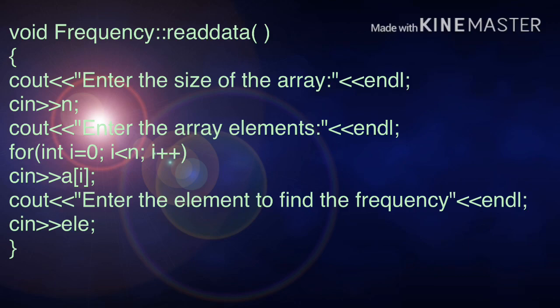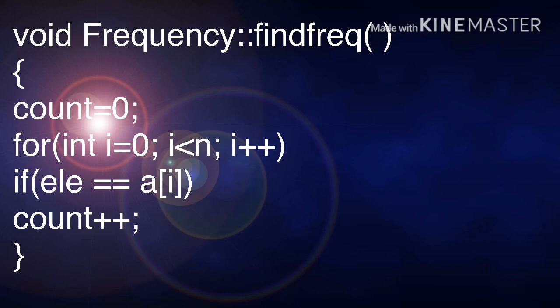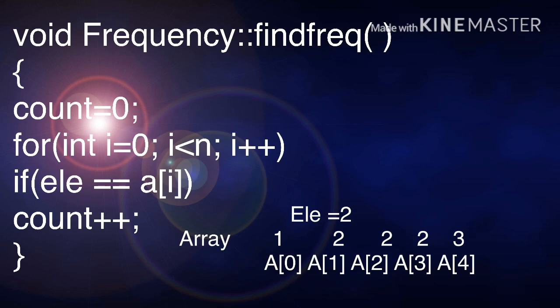To find a frequency, we are going to use a logic in the logical part. This finds the frequency of an element inside an array. So void frequency is the class name, scope resolution operator, then findfrequency is the member function. So initially, count will be 0. Next, it is a for loop.